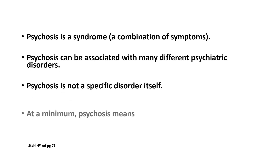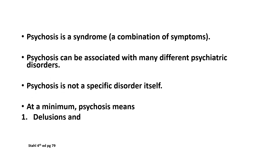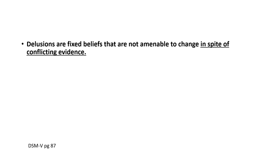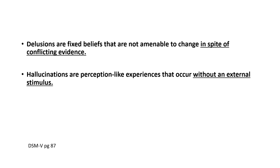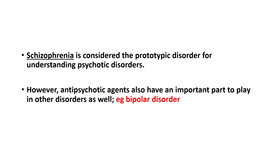At a very basic level, psychosis refers to hallucinations and delusions. A delusion is a fixed belief that is not amenable to change in spite of providing conflicting evidence. A hallucination is a perception-like experience that occurs without an external stimulus. Schizophrenia is considered the prototypic disorder for understanding psychotic disorders, but psychosis also occurs in many other disorders such as bipolar disorder and transient psychotic disorders.